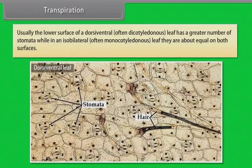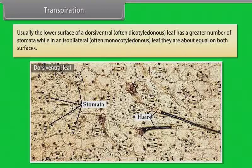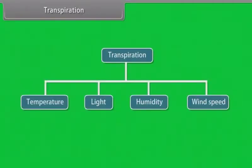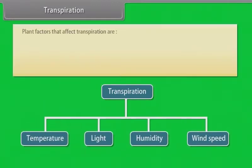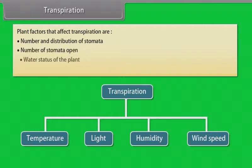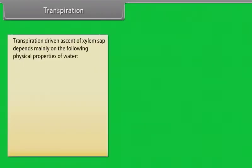Usually the lower surface of a dorsiventral or often dicotyledonous leaf has a greater number of stomata, while in an isobilateral or often monocotyledonous leaf they are about equal on both surfaces. Transpiration is affected by several external factors like temperature, light, humidity, and wind speed. Plant factors that affect transpiration include number and distribution of stomata, number of stomata open, water status of the plant, and canopy structure. The transpiration-driven ascent of xylem sap depends mainly on some physical properties of water: cohesion, adhesion, and surface tension. Cohesion is the mutual attraction between water molecules; adhesion is the attraction of water molecules to polar surfaces such as the surface of tracheary elements; and in surface tension, water molecules are attracted to each other in the liquid phase more than to water in the gas phase.